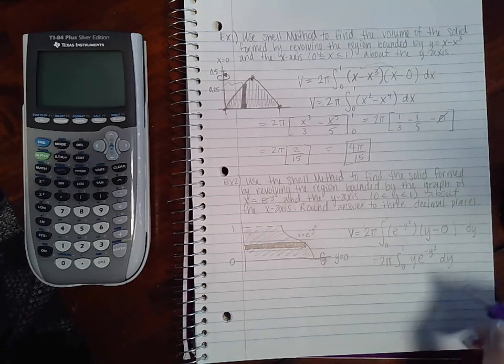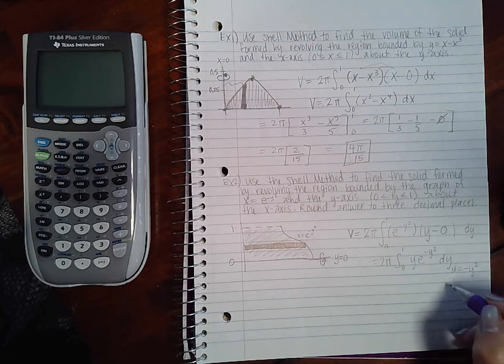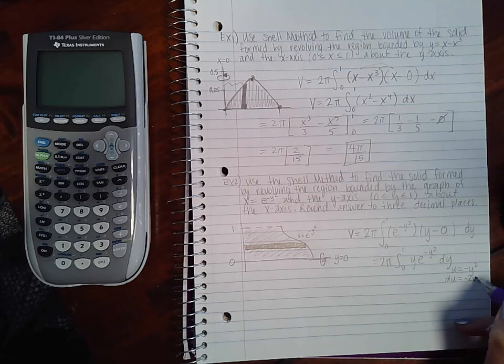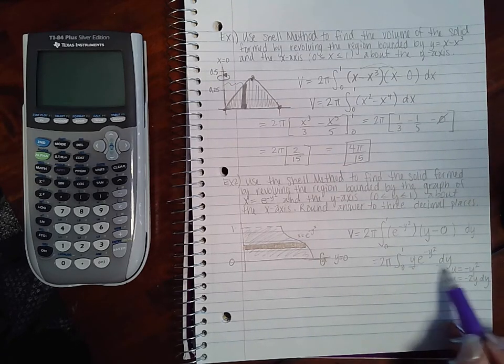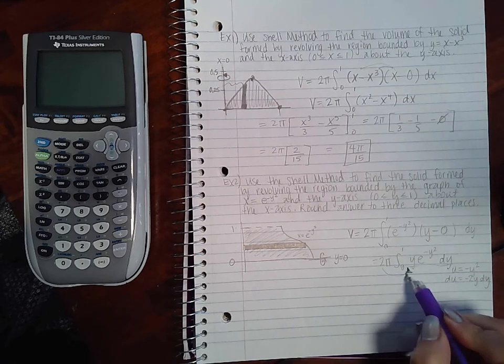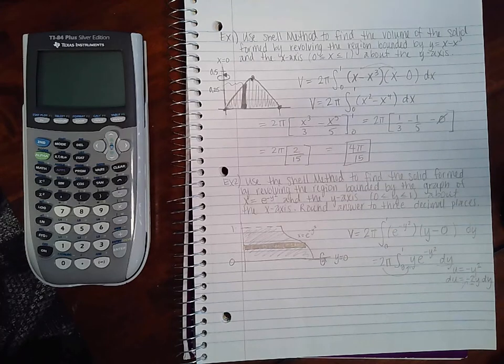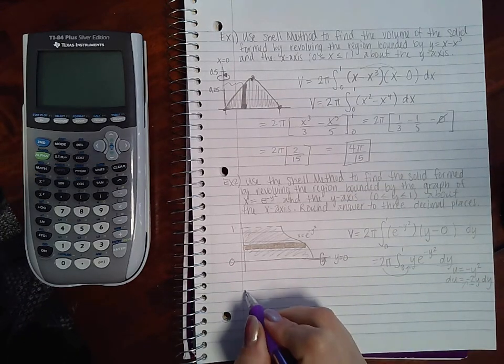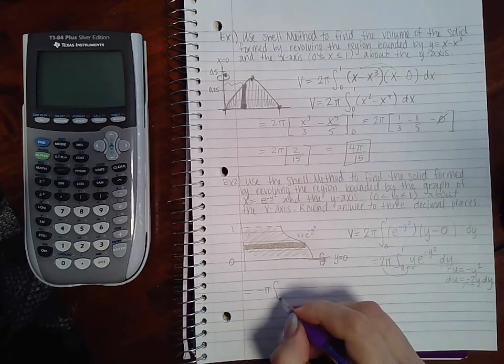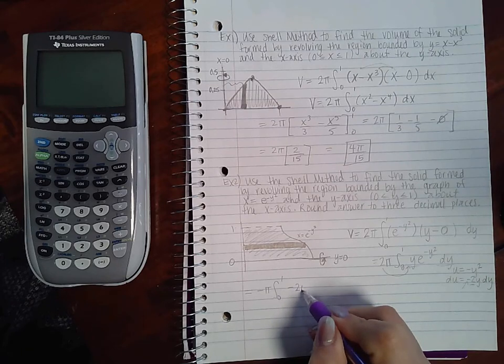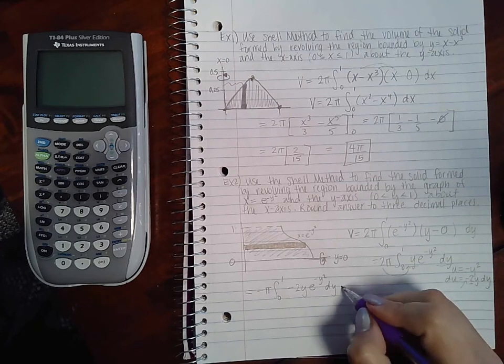I think I want to use u-substitution. So then du would have to be negative 2y dy, and I only have the y dy. I could bring this 2 in, but I am still missing the negative. So in order for me to put a negative in, I also have to take a negative out. So what this means is I'm going to have negative π.